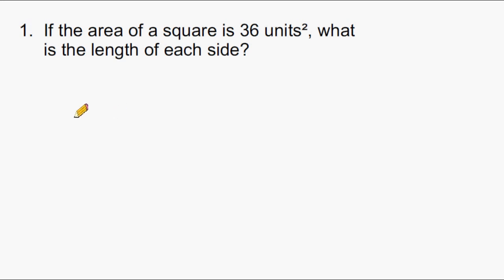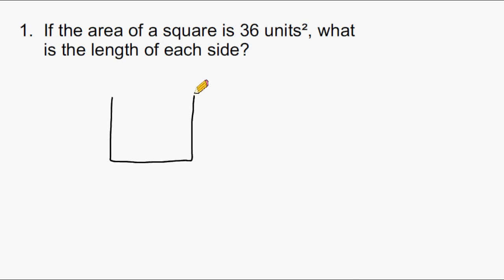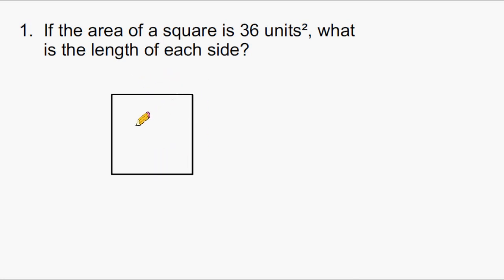For this first problem, it says that if the area of a square is 36 units squared, what is the length of each side? What we should remember about any square is that its length and its width are identical. So to find the area of any square, we multiply a number by itself. The only number you can multiply by itself to make 36 is 6, which means each side must be a length of 6.